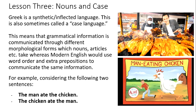Modern English is a great example of an analytic language because there's actually very little change to the form of words. That is not necessary to show whether the word is being used as a subject, a direct object, or an indirect object, because within modern English that information is largely supplied through the word's position within the order of the sentence.